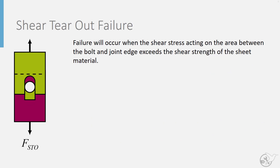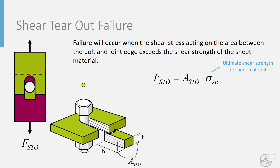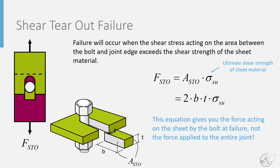Shear tearout failure occurs when the shear stress acting on the area between the bolt and the joint edge exceeds the shear strength of the sheet material. The shear tearout force is the shear tearout area times the shear ultimate strength. The shear tearout area is defined by two regions — one on each side of the bolt — giving us 2 times the edge distance b times the thickness t. Again, this equation gives the force acting on the sheet by a single bolt at failure, not the total force applied to the entire joint.